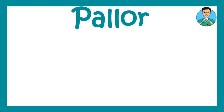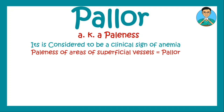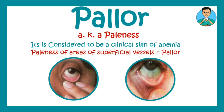Hello everyone, the Nerd Medic here. In this video let us learn about pallor, also known as paleness, which is considered to be a clinical sign of anemia. Paleness of areas of superficial vessels is what defines pallor. In this image we can see a normal conjunctiva, which is a region of superficial vessels, whereas in this image the conjunctiva appears pale — this is a sign of pallor.